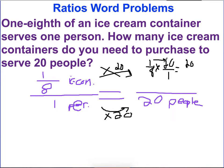One times 20 is 20. Eight times one is eight. 20 over eight. You can divide that if you want to or you can simplify it. For this purpose, I would prefer to divide it.